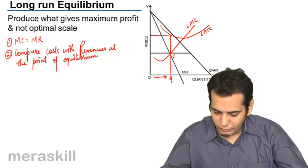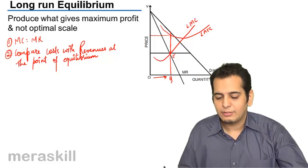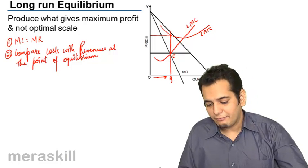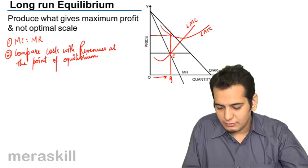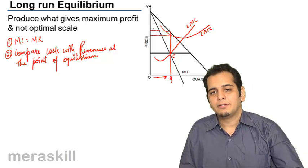Again, from the point of equilibrium, I move up and reach the long run average total cost curve. This gives me my revenue.